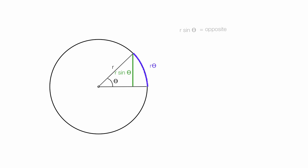I can take that r times sine theta divided by r times theta. I can take the limit of theta as it goes to zero. Those r's cancel out.